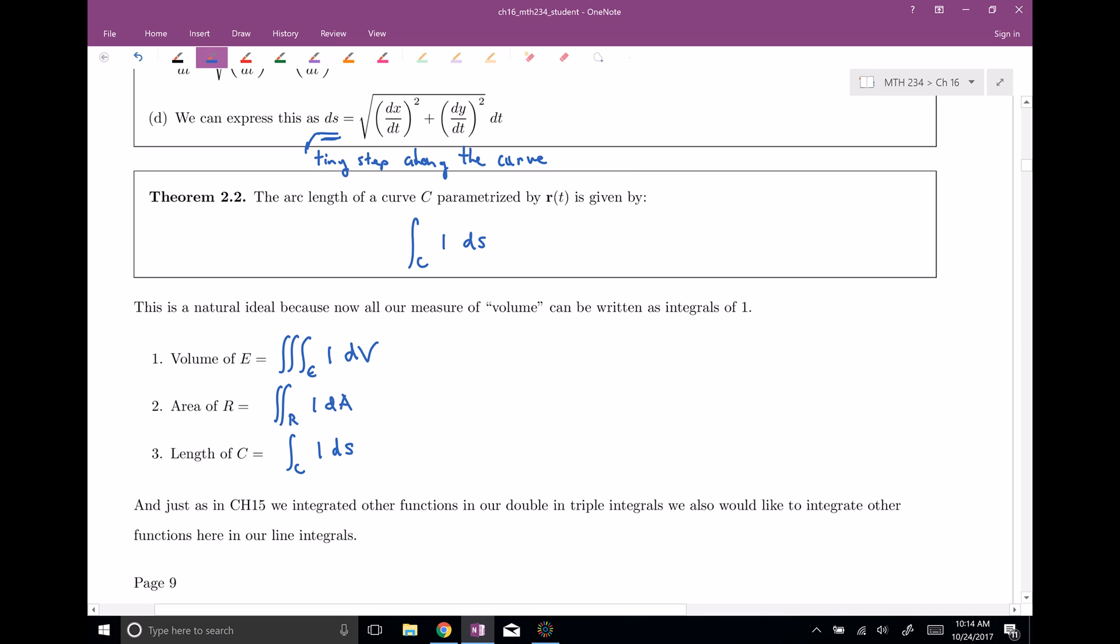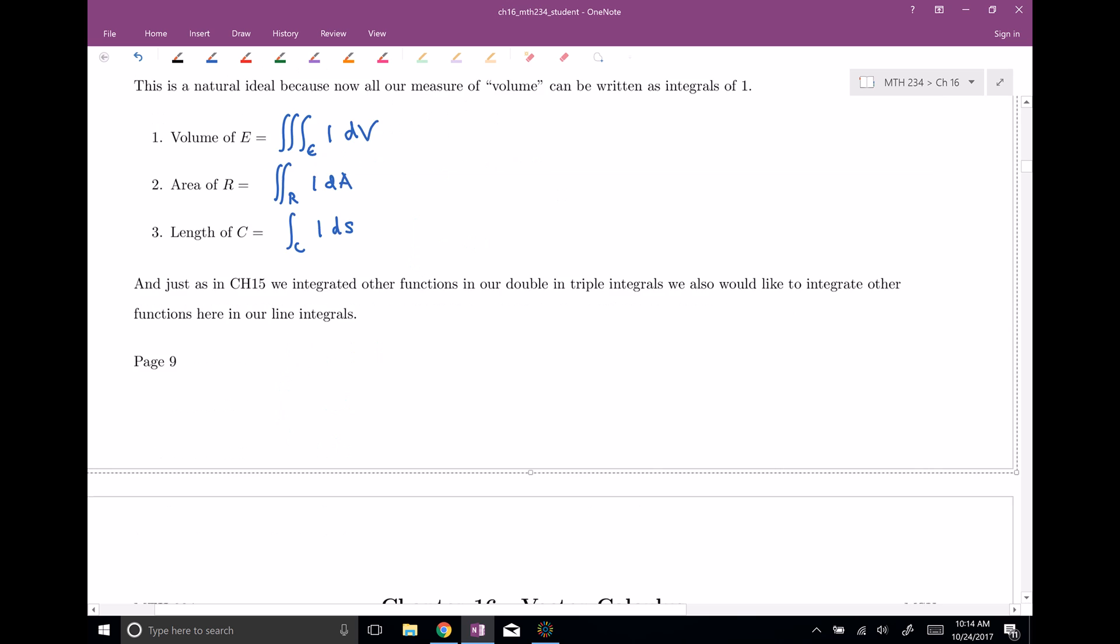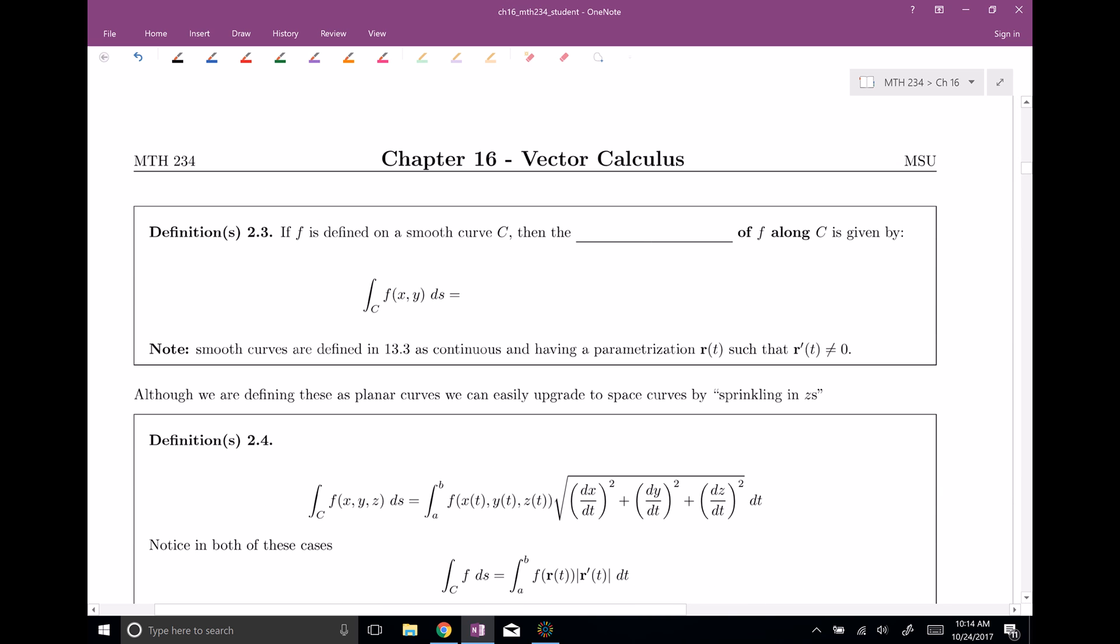Okay, so now that we're just integrating one right here, the next question is, well, what happens if you integrated a different function? So for instance, we integrated things that weren't just one when we had triple integrals, and we integrated things that weren't just one, so any old f, when we had double integrals. And we want to be able to do the same thing now with these line integrals. And so that's where we're headed with this. If f is defined on our curve, c, then the line integral of f along c is given by, and instead of integrating one, we're integrating f.